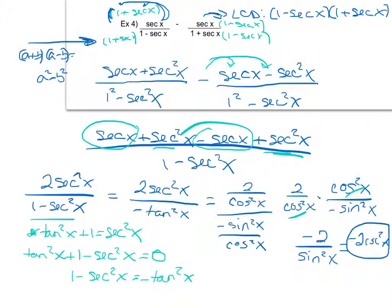Just to recap: sometimes it helps to write in terms of sine and cosine. Get a common denominator if you have fractions — you do not need a common denominator for multiplying. Look for Pythagorean identities by looking for two trig functions squared, or a one and a trig function squared with addition or subtraction. Sometimes factoring and foiling will help as well. There's no general ordered set of rules — these are just general tips of things you can try, and we'll spend some time in class doing examples together.